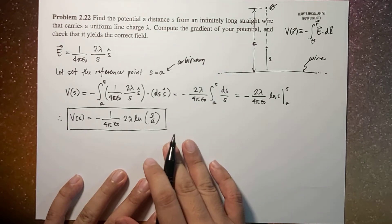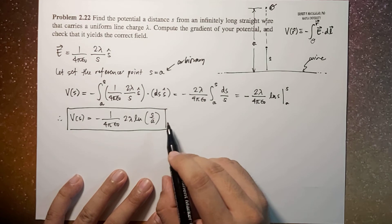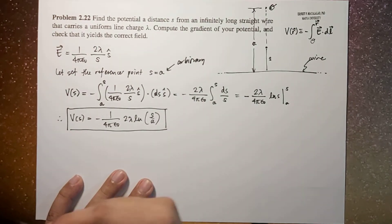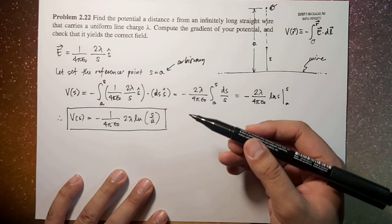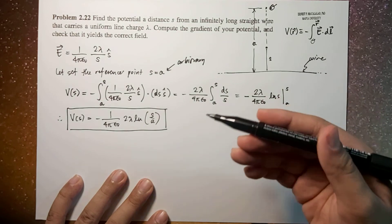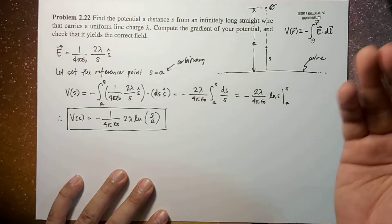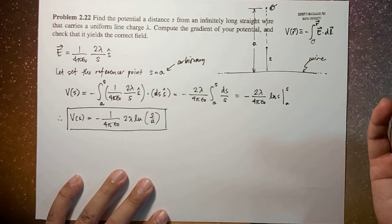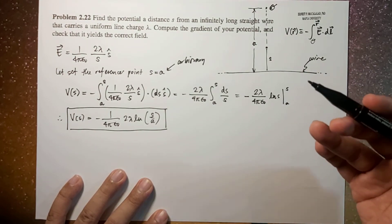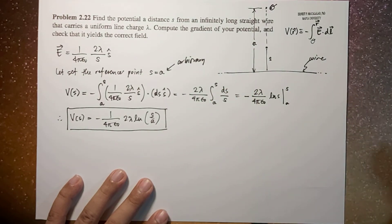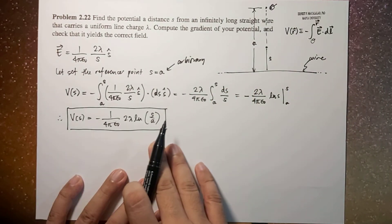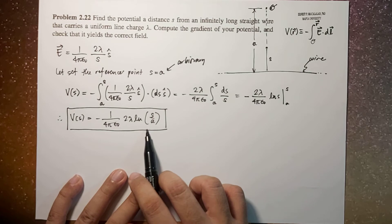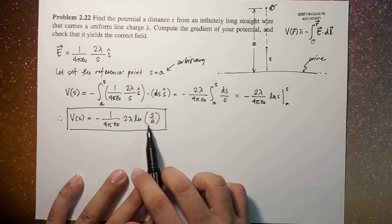Now as you will notice that if we let the reference point to be from infinity, because usually we assume that at infinity there's no potential, but because the configuration that we have extends to infinity, therefore we cannot expect that the potential due to this wire will be zero at infinity. And this is shown here because,